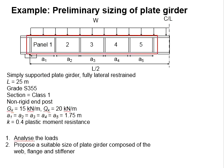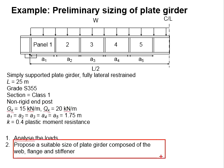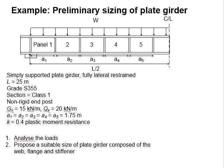There are a series of stiffeners along the span. The stiffeners are spaced at equal distances of 1.75 meters. Take k = 0.4 for plastic moment resistance. The question asks to analyze the load and also propose a suitable size of the plate girder which is composed of the web, flange, and stiffeners.